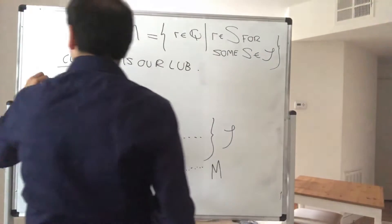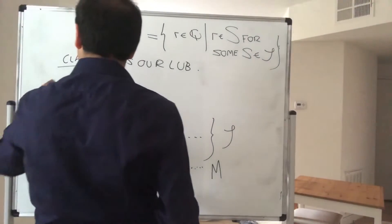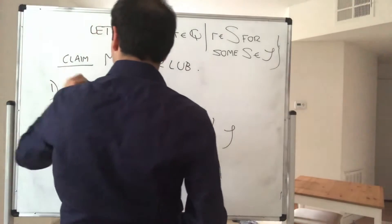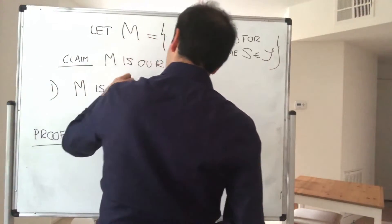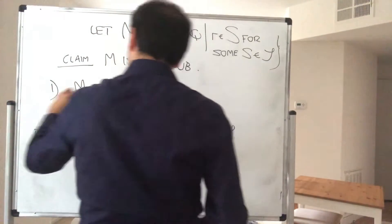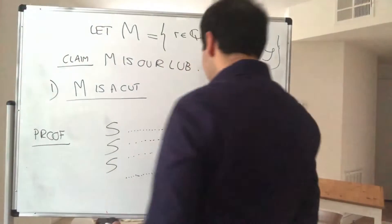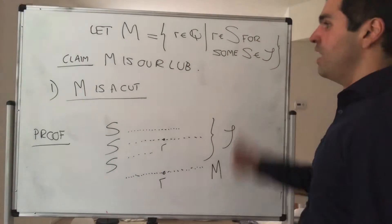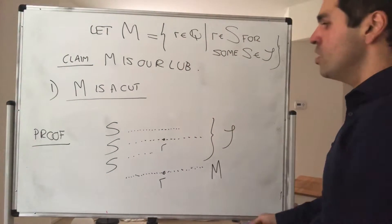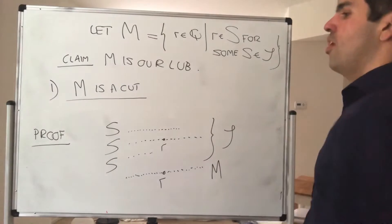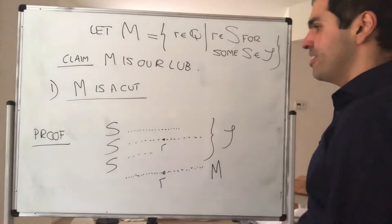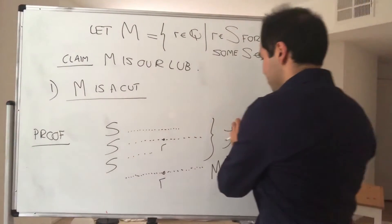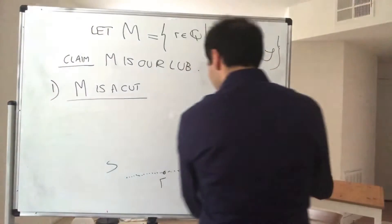So what do we have to show? We first of all have to show that M is a real number — that it's a cut. We have to show that it is an upper bound, and we have to show it's the least upper bound. Quite a lot of work.